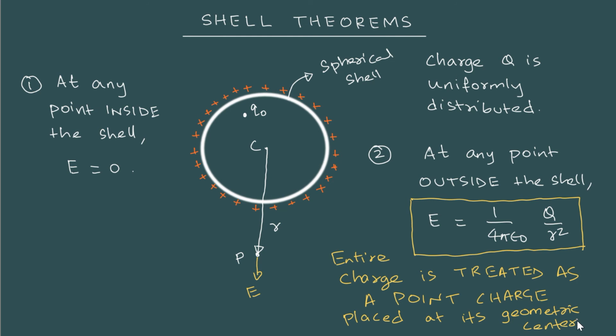Let me repeat this again. At point C, which is the geometric center of the shell, if you had a point charge Q, it would create this electric field at point P. And if you had this shell of charge, that would also create the same electric field. Essentially, we are treating the entire charge as if it is a point charge placed at its geometric center.